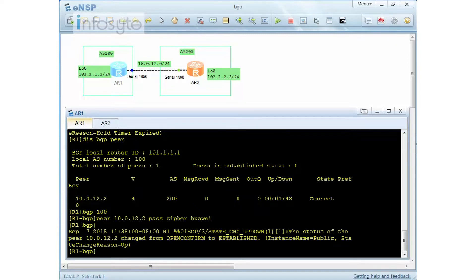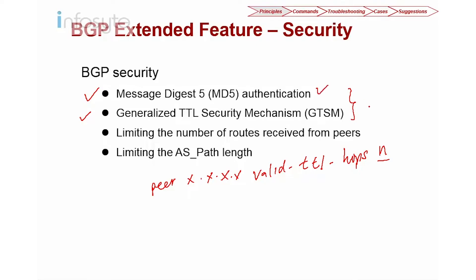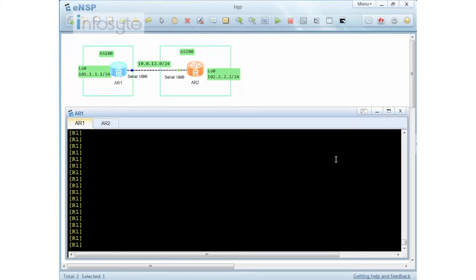The second security method is the Generalized TTL Security Mechanism (GTSM). GTSM checks the TTL hop count. To configure it, use the command 'peer [IP] valid-ttl-hops [number]'. This checks the TTL at the IP level, as opposed to MD5 which works at the transport level.